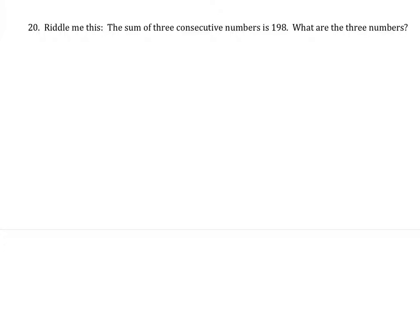Riddle me this. The sum of three consecutive numbers is 198. What are the three numbers? As it turns out, there's a quick way to do this. Let us show you 198.